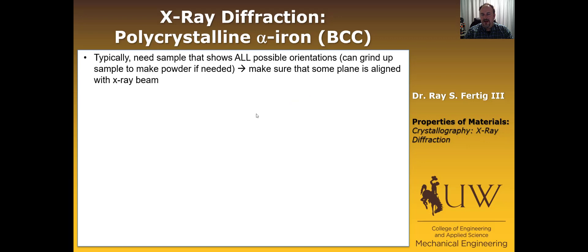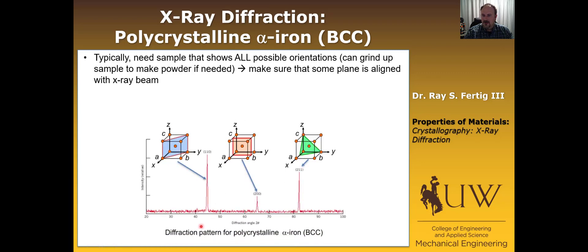Let's do an example: X-ray diffraction of polycrystalline alpha iron, which is BCC. We want a sample showing all possible orientations so the incident and exit beams capture planes oriented properly. The result is a typical X-ray diffraction pattern with angle on the x-axis and intensity on the y-axis. We see three peaks — the 110, the 200, and the 211 — corresponding to planes inside the BCC crystal that are diffracting.